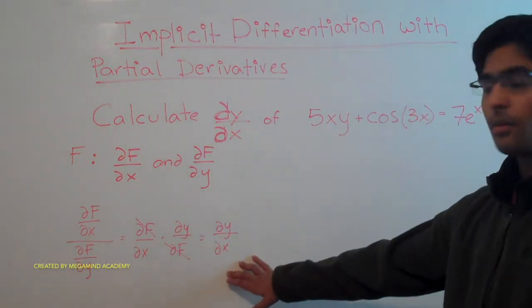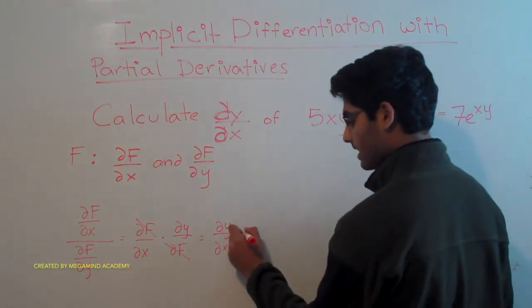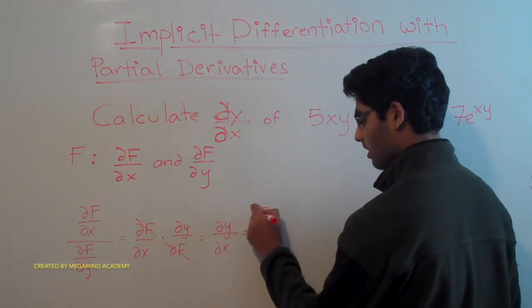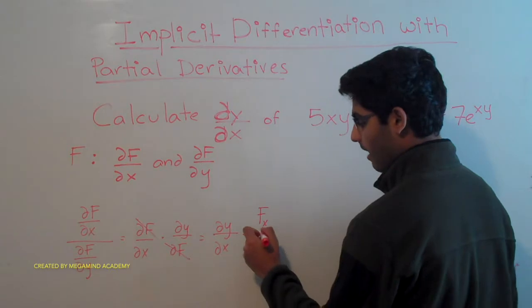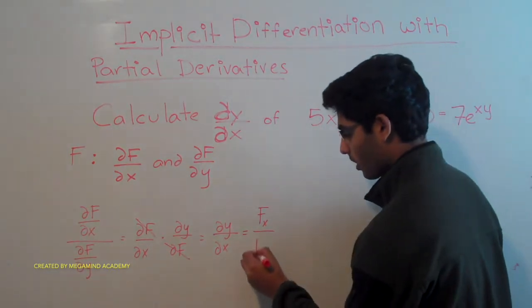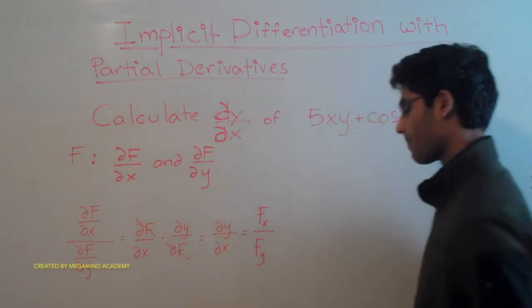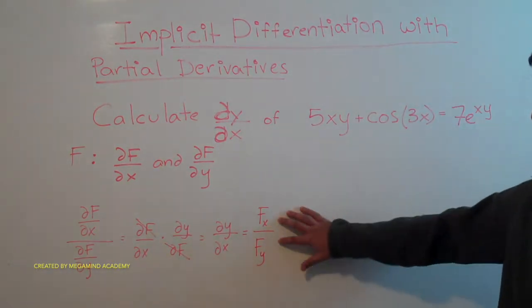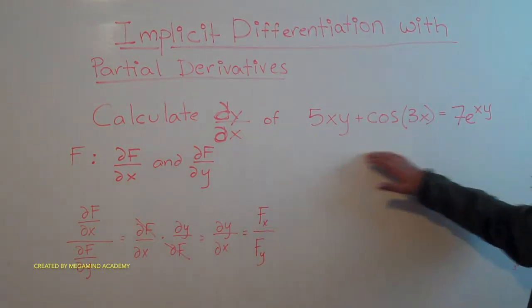So now we know how to solve this. This is going to be dy/dx is going to be equal to the partial of f with respect to x over the partial of f with respect to y. So now that we know this, let's do that in this problem.